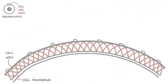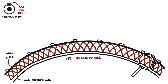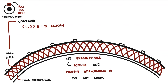Unlike most fungi, Pneumocystis lacks ergosterol in its cell wall. Therefore, commonly used antifungal medications that target ergosterol synthesis, such as the azoles and amphotericin B, do not work against Pneumocystis. The cell wall of Pneumocystis does contain beta-D-glucan, which is important because beta-D-glucan is a blood test that can be ordered.